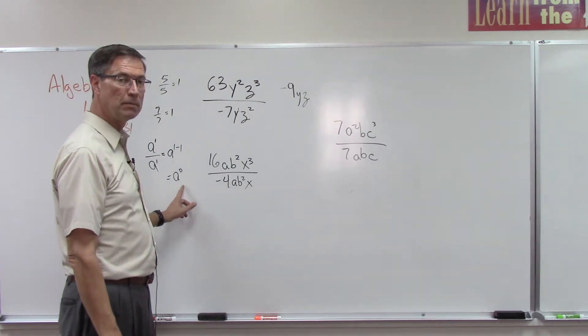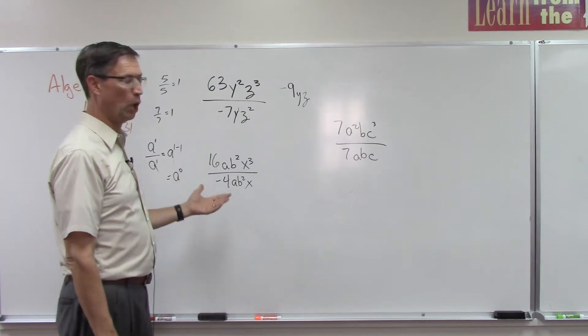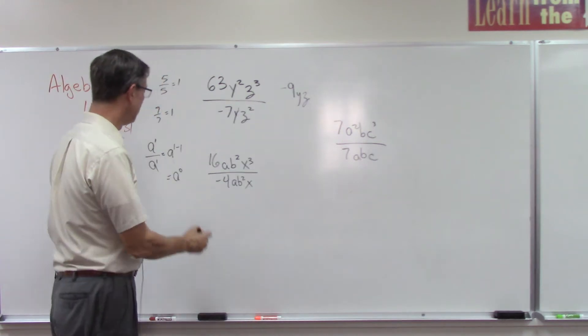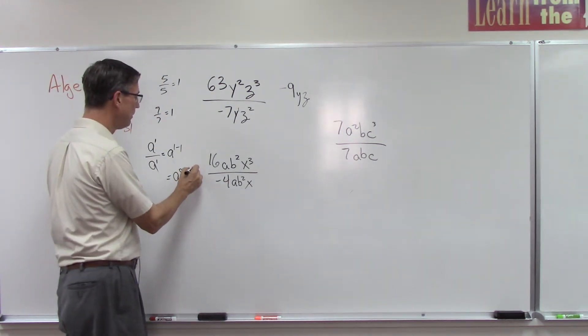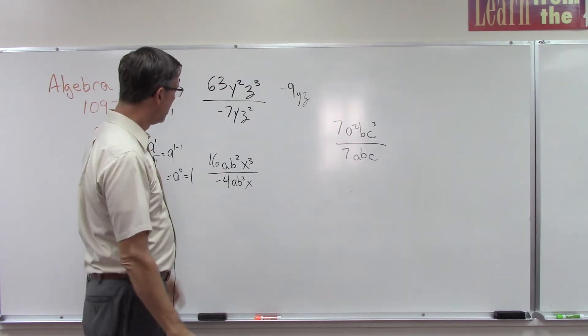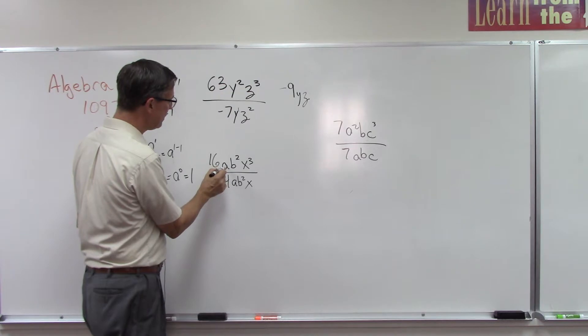Huh, so we have a rule in algebra that says that anytime we have a non-zero base - any base, no matter what it is, it could be a number raised to the 0 power, it could be a letter raised to the 0 power - anything raised to the 0 power equals the number 1.